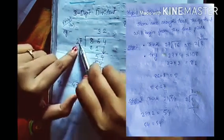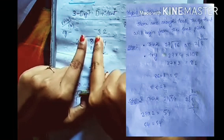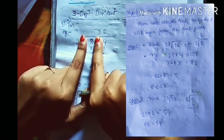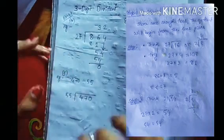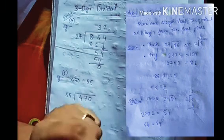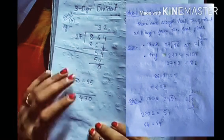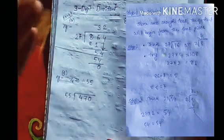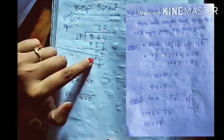We have to think how many times 27 goes into 86. If we cover the ones place digit, we see 2 and 8 - and we know 2 fours are 8, so 4 is our estimated quotient. But 27 times 4 is 108, which is more than 86, so we have to reduce the number and try a smaller one. 27 times 3 is 81, and 86 minus 81 gives remainder 5. So the first digit of the quotient is 3.